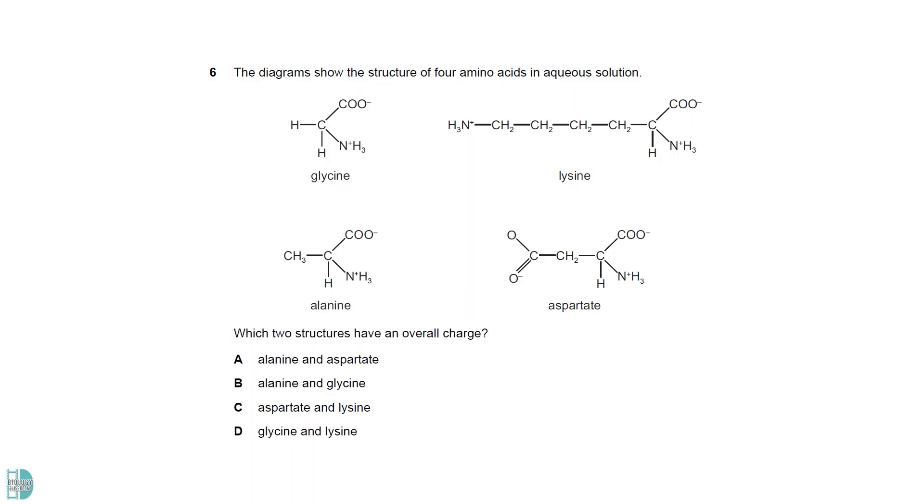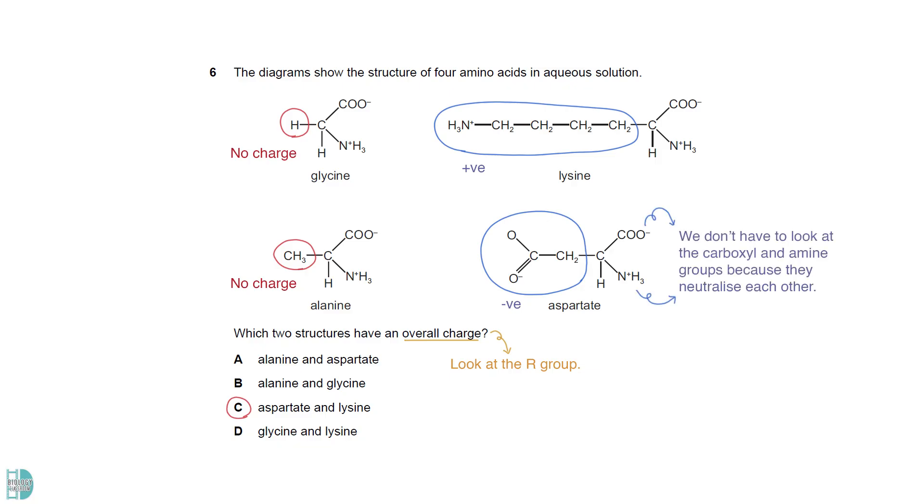To determine if an amino acid has an overall charge, we need to look at the R group. In this case, aspartate and lysine have positive 1 and negative 1 charges at their R groups. The carboxy and amide groups have charges too, but they neutralize each other.